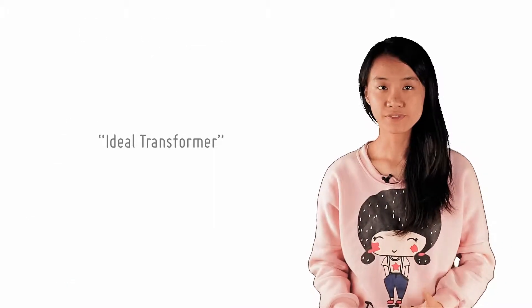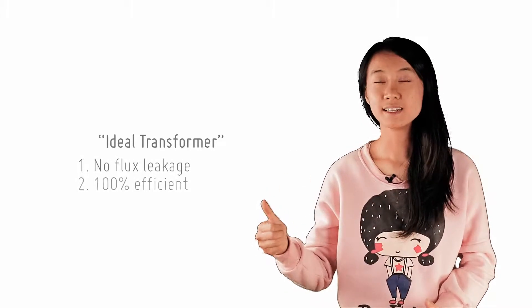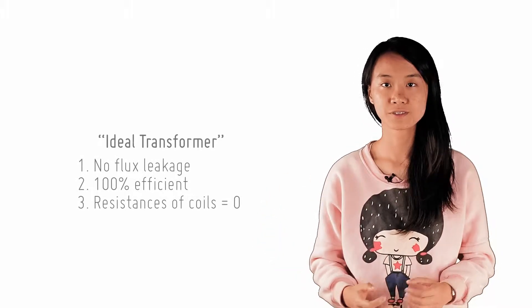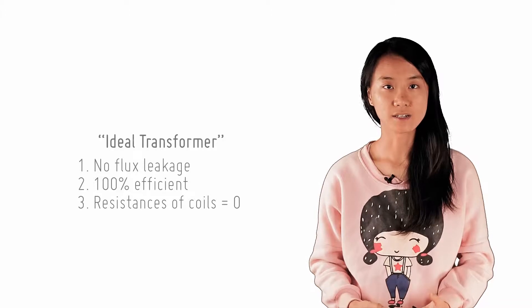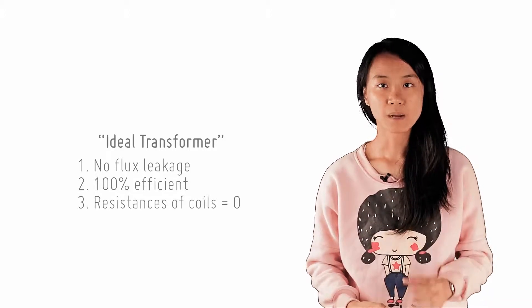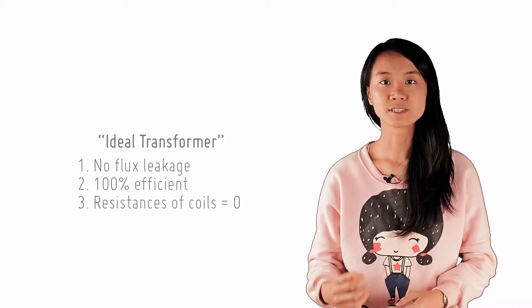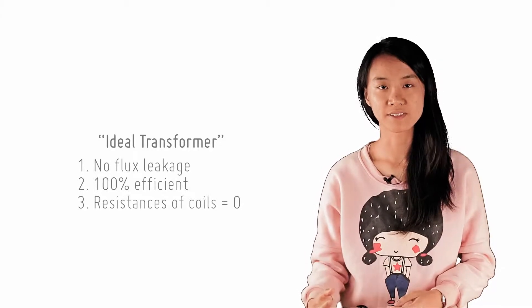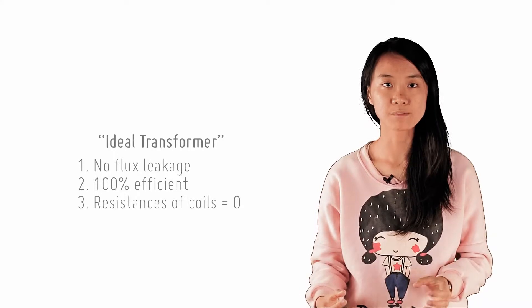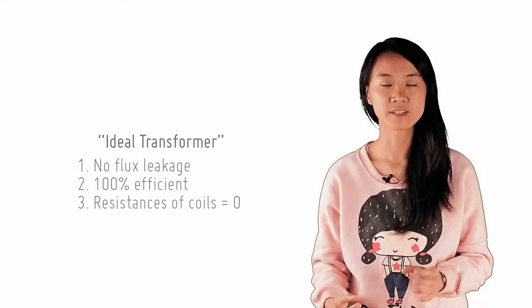The ideal transformer has the following three features. Firstly, it assumes that there's no flux leakage throughout the soft iron core, so both the primary and secondary coils have the same magnetic flux throughout them. Recall that this was used to show that the ratio of the magnetic flux linkage between the secondary and primary coils was proportional to the number of coils.